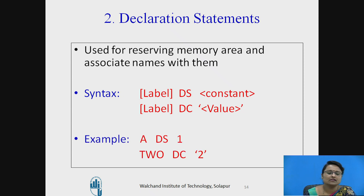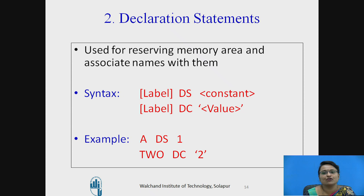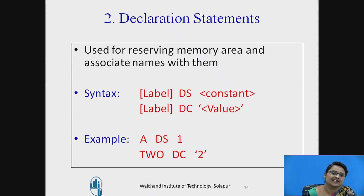Consider the example: 'A DS 1' declares a storage of one memory word and assigns the name A to it. The second example declares a constant with value 2, storing the value 2 and naming that memory address as 2.